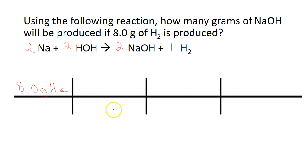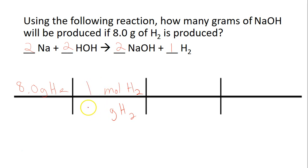I'm going to bring grams of H2 to the bottom. Before we can do anything, we've got to go back to moles of H2. It's always 1 mole of H2, and we're trying to find grams — in this case, that's 2.0 since H is 1 and we've got 2 of them. Grams cancels out, and that leaves me with moles of H2.